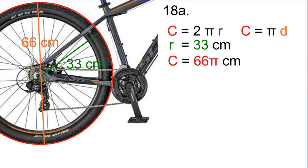If a cyclist has a bicycle with a 66 centimeter diameter wheel and a 40-tooth drive gear, what's the circumference of the rear tire of the bicycle in meters?